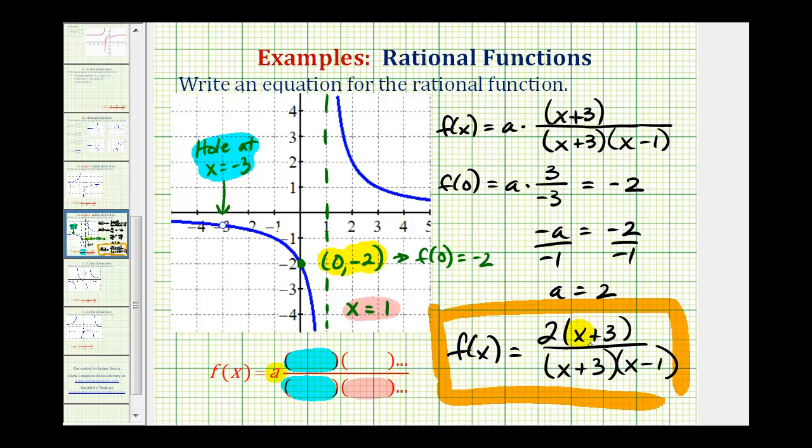Notice how the degree of the numerator is one, and the degree of the denominator is two. When the degree of the numerator is less than the degree of the denominator, the horizontal asymptote is y equals zero.